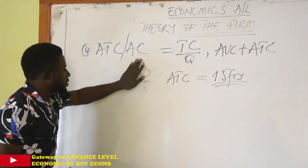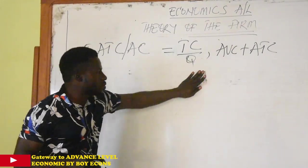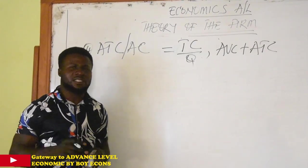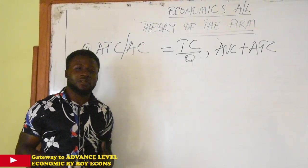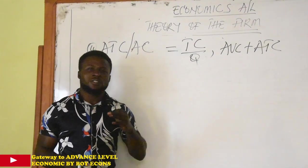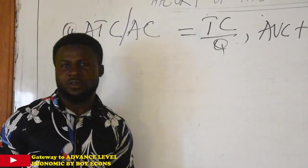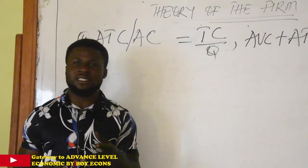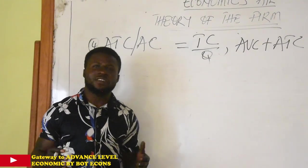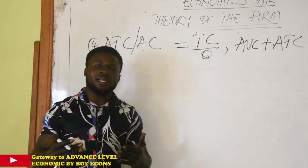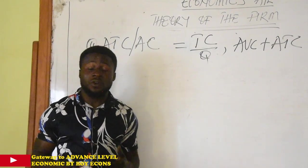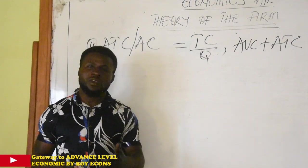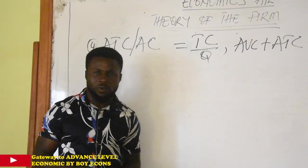So average total cost is a very significant concept as far as this cost concept is concerned. It is very important. Why? Because average total cost tells us about some two important concepts in economics. We have the idea of economies of scale and then we have dis-economies of scale. Without the use of average cost, we cannot properly illustrate a situation where a firm is facing economies of scale, facing dis-economies of scale, or even its technical optimal output level.